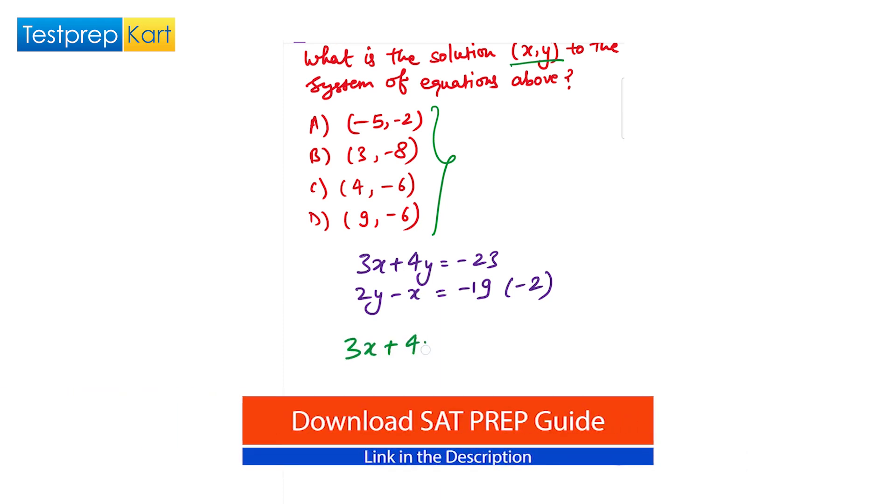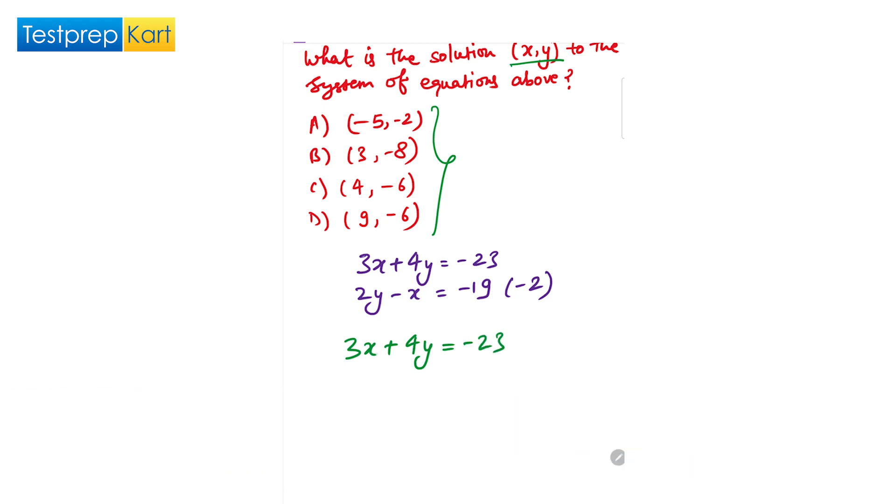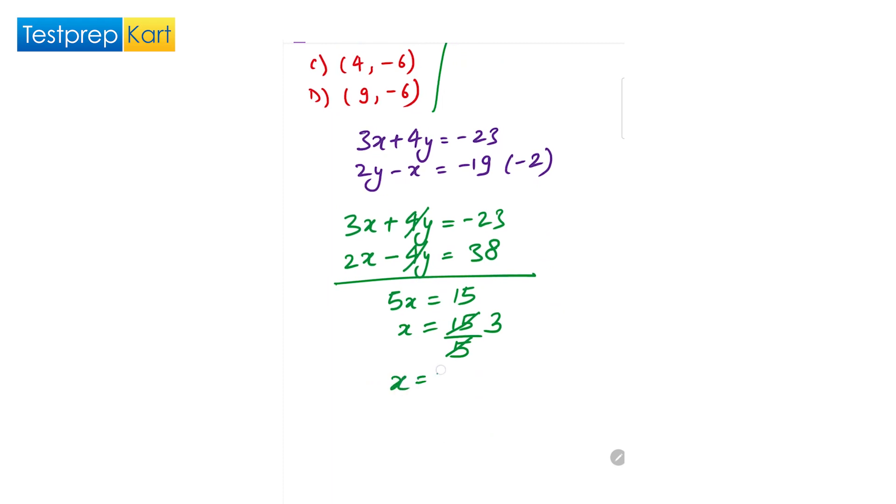Here, 3x plus 4y equals minus 23, and after multiplying by minus 2, this is 2x plus 4y equals 38. So if we solve this question, these two cancel out each other. 3x plus 2x is 5x equals 38 minus 23, which is 15. So x equals 15 by 5, which is 3. We have the value of x, which is 3.